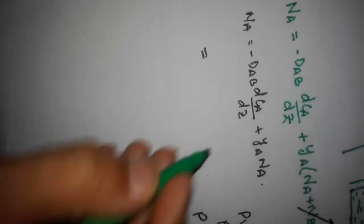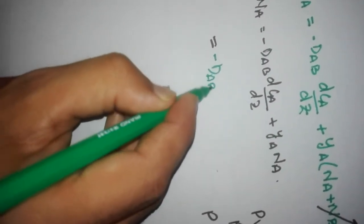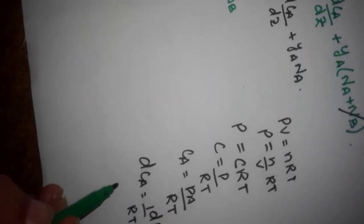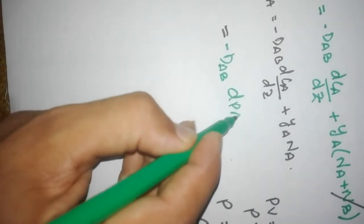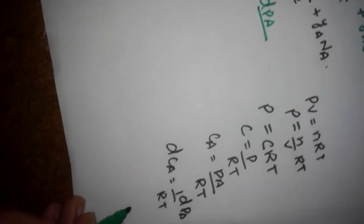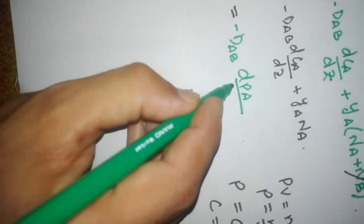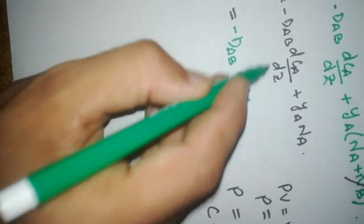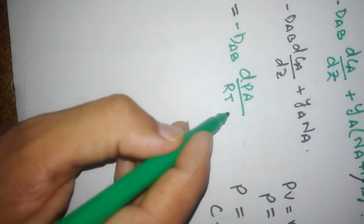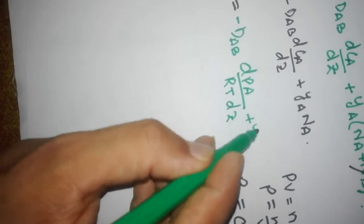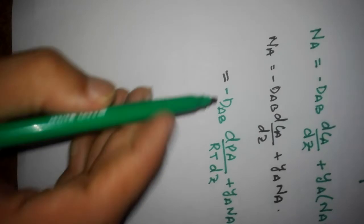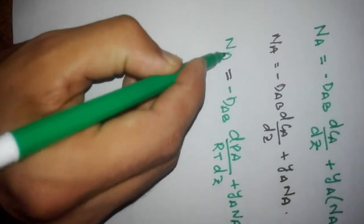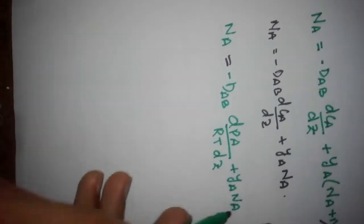Substituting dCA with dPA/RT into the flux equation: NA = -DAB · (1/RT) · (dPA/dZ) + YA · NA.